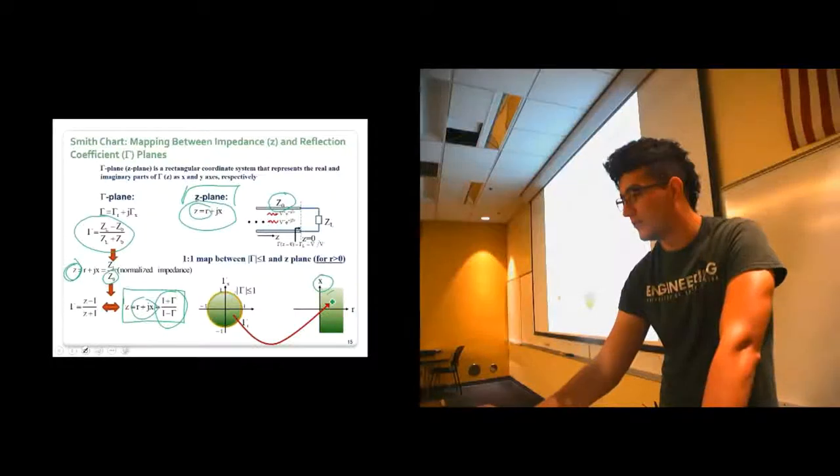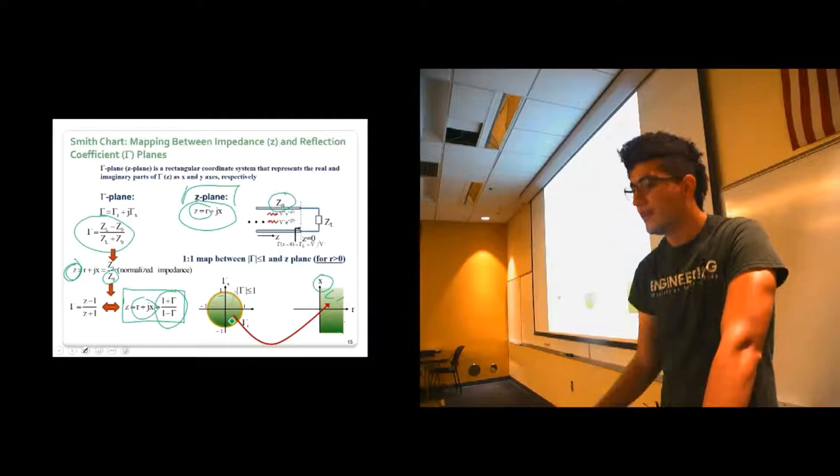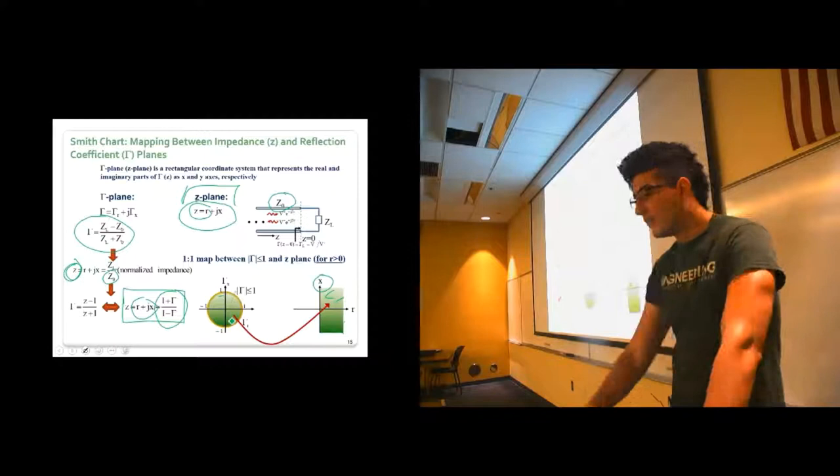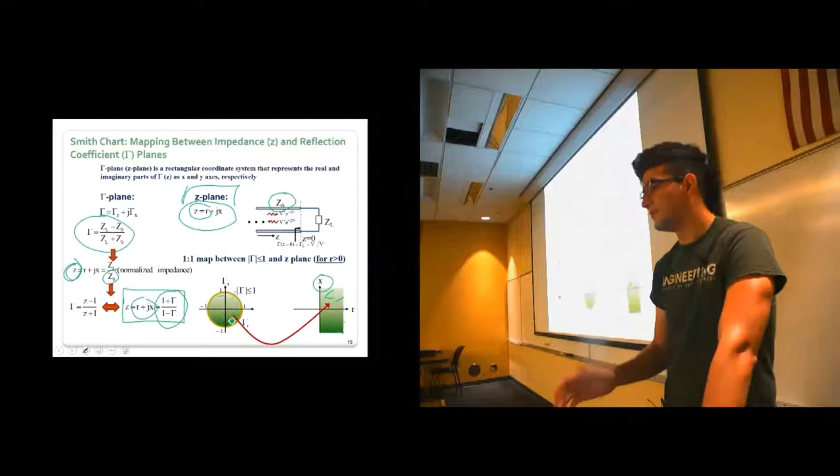This green domain that is in here, it maps one-to-one to this domain, which is inside the circle. So that's the gamma equal to one circle. So all of the possible values of impedances inside this transmission line, you can find them inside this circle.